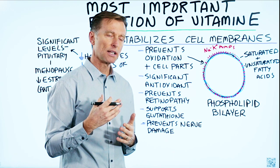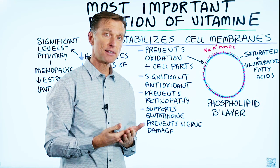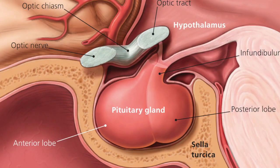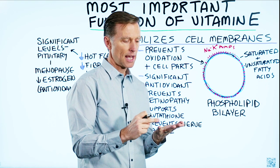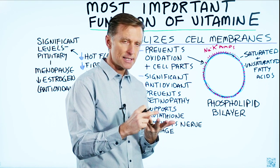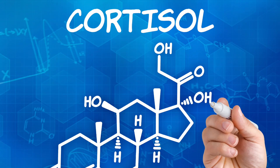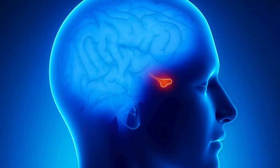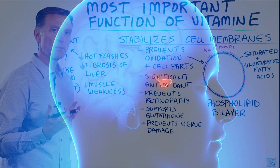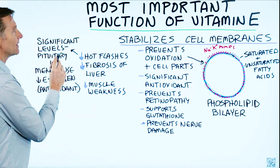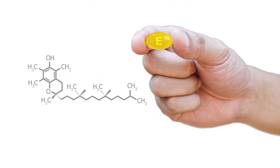Most of the vitamin E is stored in the liver and the fat cell, but with significant amounts inside your pituitary. All the sex hormones — estrogen, progesterone, testosterone, even cortisol — originate as a controlling hormone in your pituitary. Because these hormones are made out of cholesterol and fat, you need high levels of vitamin E to protect them from being oxidized.